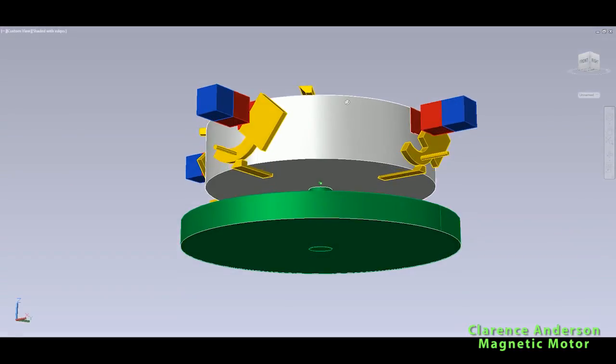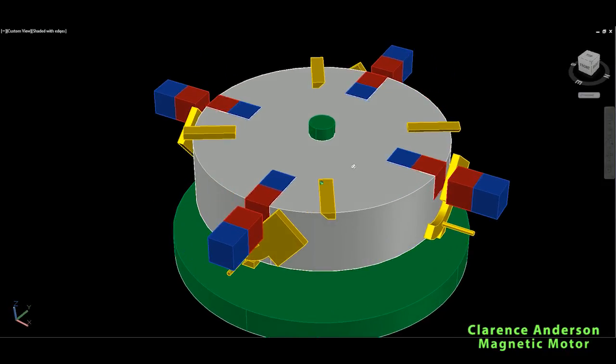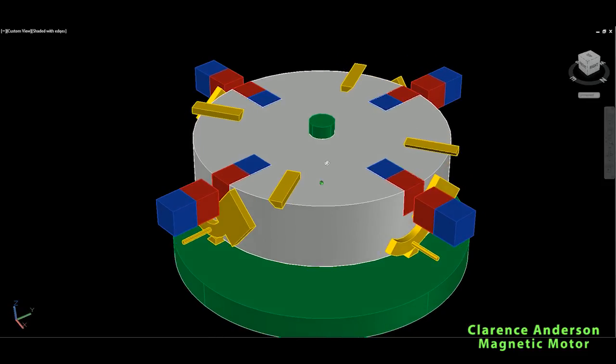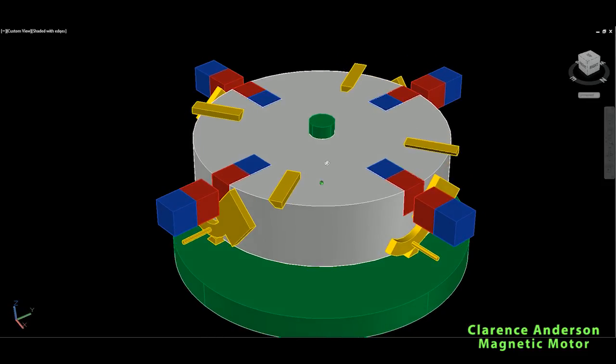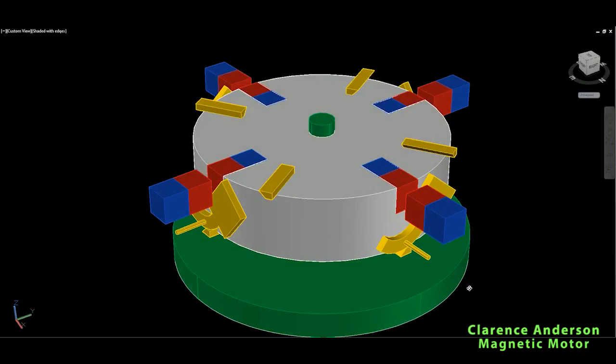Basically, it's represented as an apparatus for demonstrating magnetic force. But for just that, you don't even need a motor; you just place the like poles facing each other. Thank you for watching. Until next video, stay tuned on my channel. Bye bye.